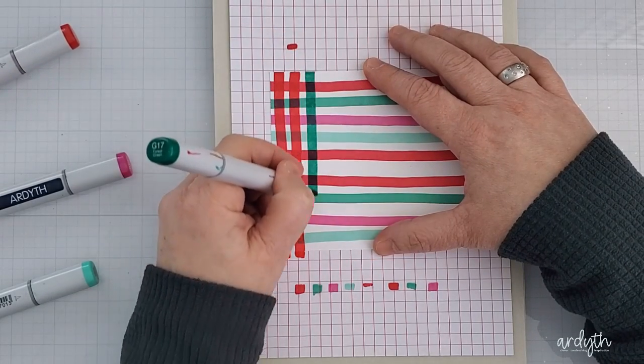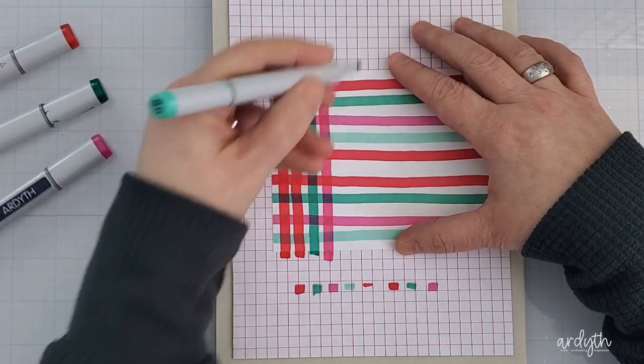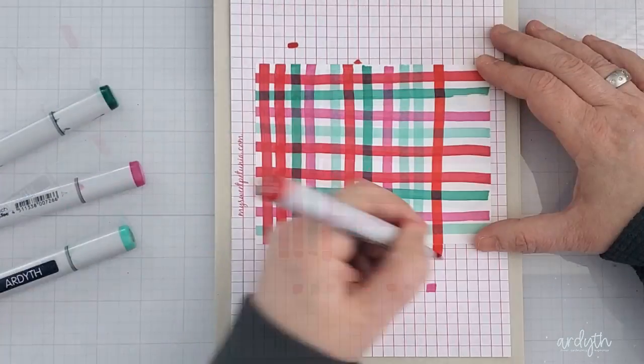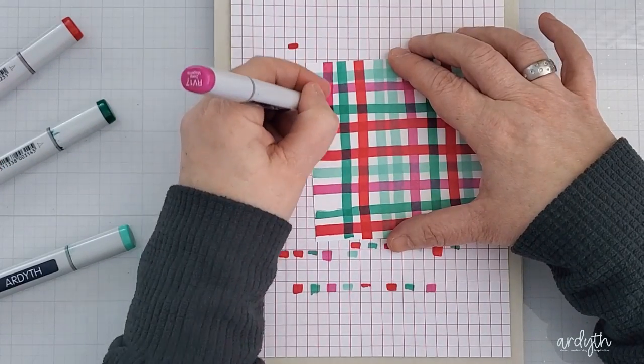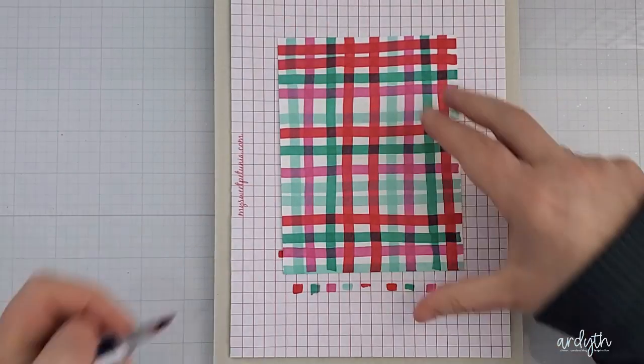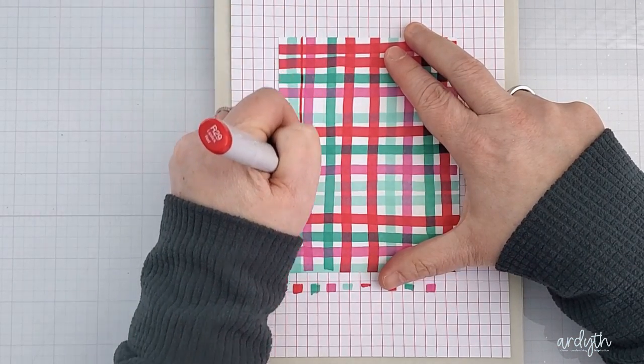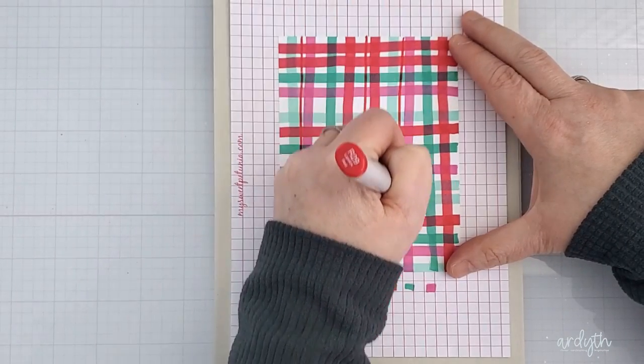Then I turn the panel horizontal and I do the same thing. You can do this with watercolors, any type of markers, ink cubes, or even the edges of your large ink pads. You can make your stripes broader or narrower and you can have as many or as few colors as you want. To add more variety, I then use the narrower nib on the other end of my markers to add some thinner lines both vertical and horizontal.